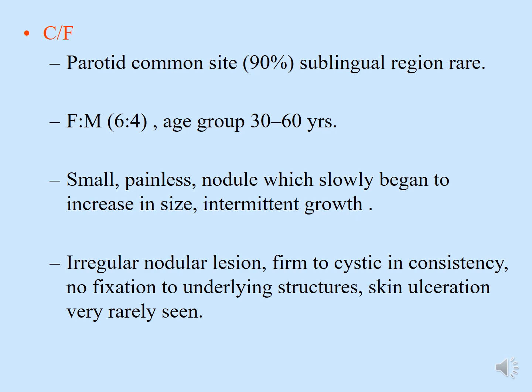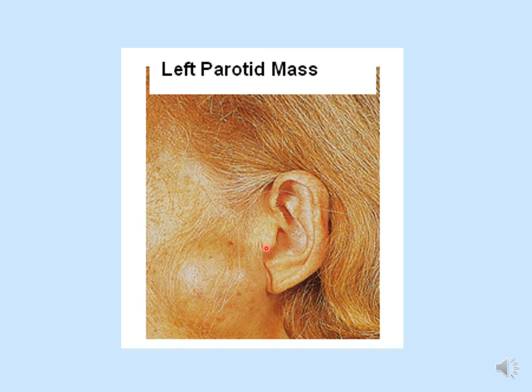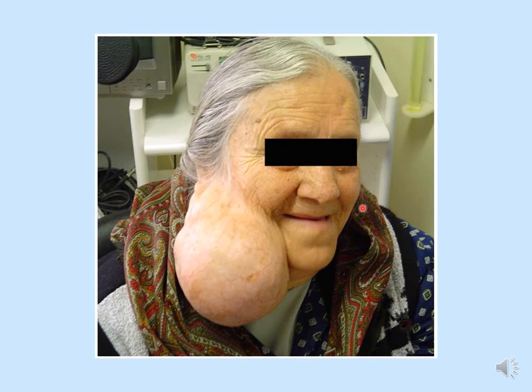Pleomorphic adenoma is a very slow growing tumor with intermittent growth, which is why patients can sometimes present with massive large swellings. Here on this slide you can see a left parotid mass — a typical presentation affecting the lower ear region. Another picture shows a patient with a very huge parotid swelling, which expanded to this size because of the intermittent and slow growth of the lesion.